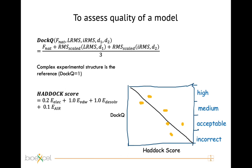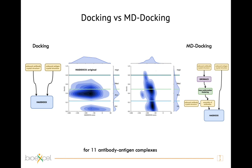Looking at our results: on the left we have results with the standard HADDOCK protocol starting from two X-ray structures — most models obtained are acceptable but there is no clear trend between HADDOCK score and DOCKQ. With our new protocol, we see a clearer trend: decreasing HADDOCK score corresponds to increasing DOCKQ. We have a higher population of medium-quality models and the peak of the distribution shifts toward medium-quality models — a clear improvement in model quality.